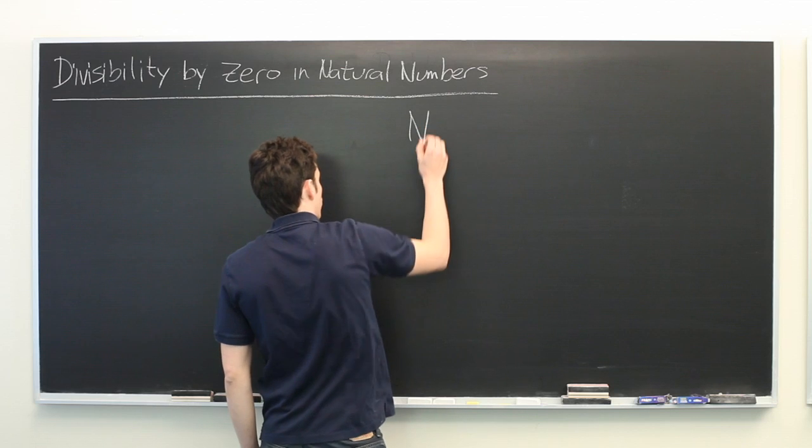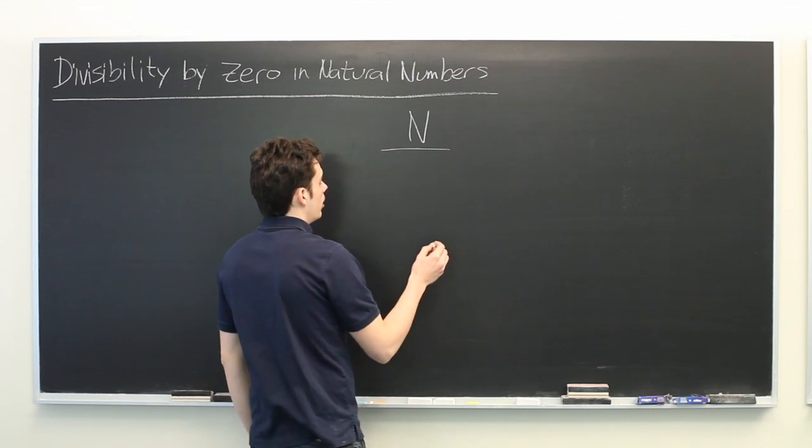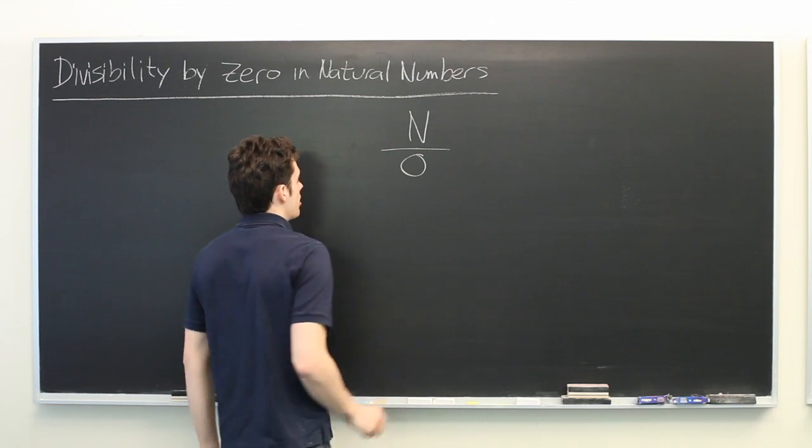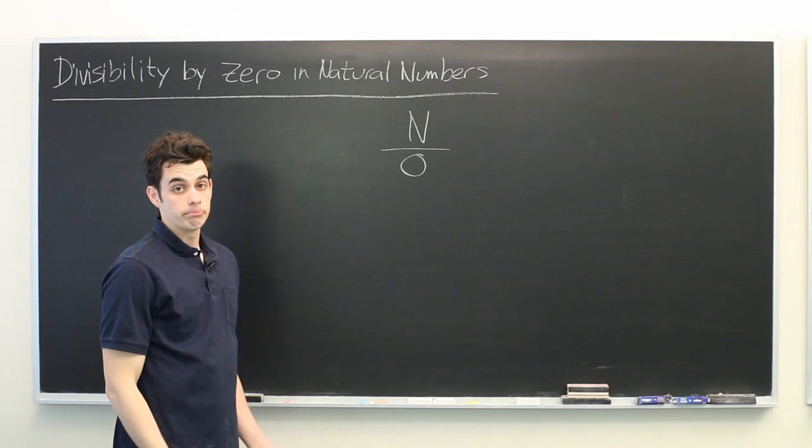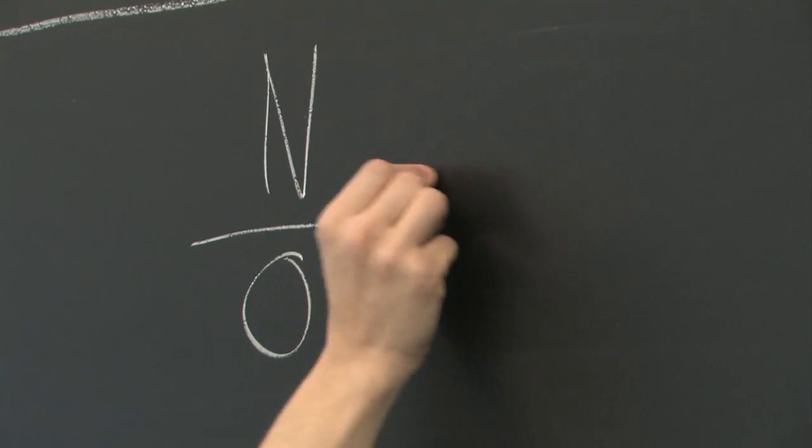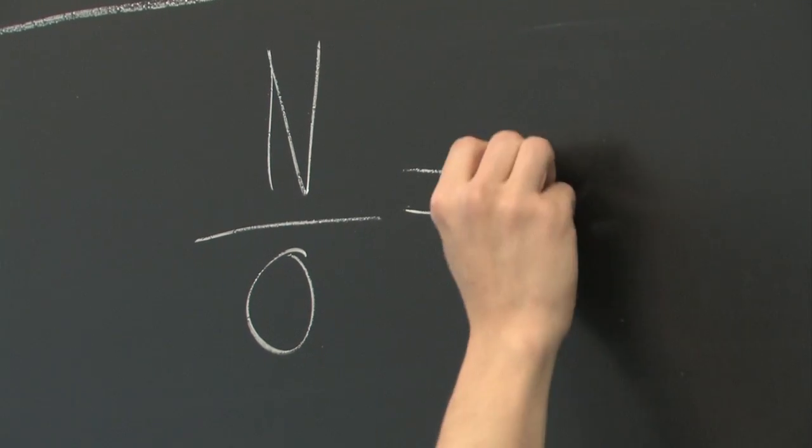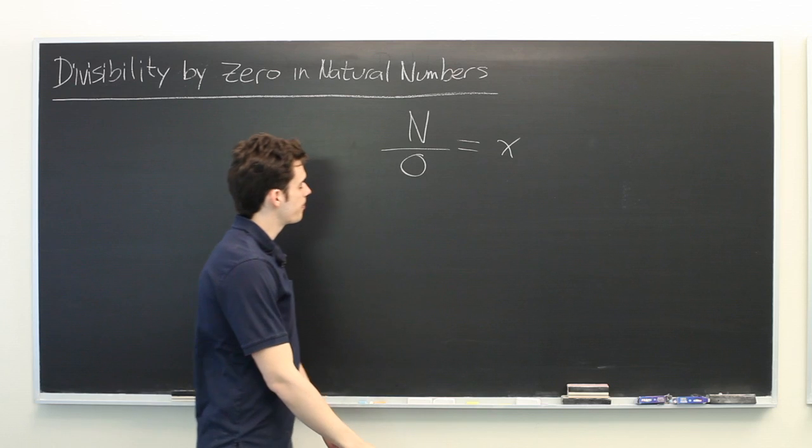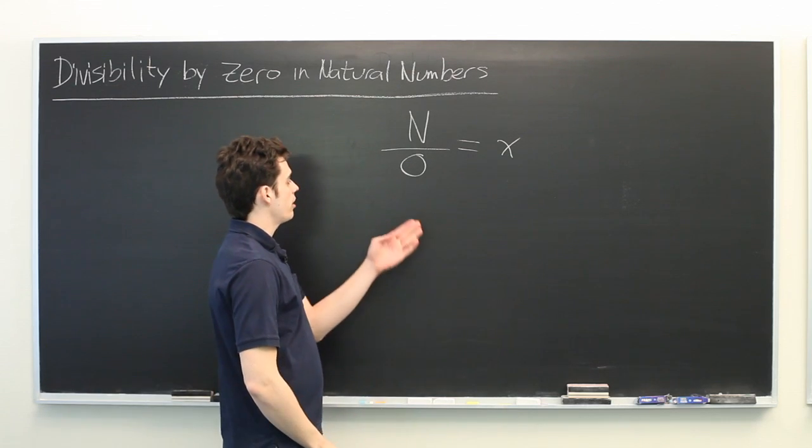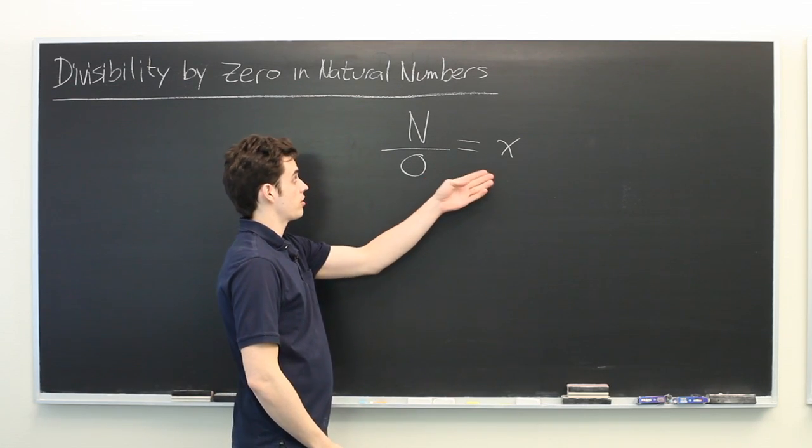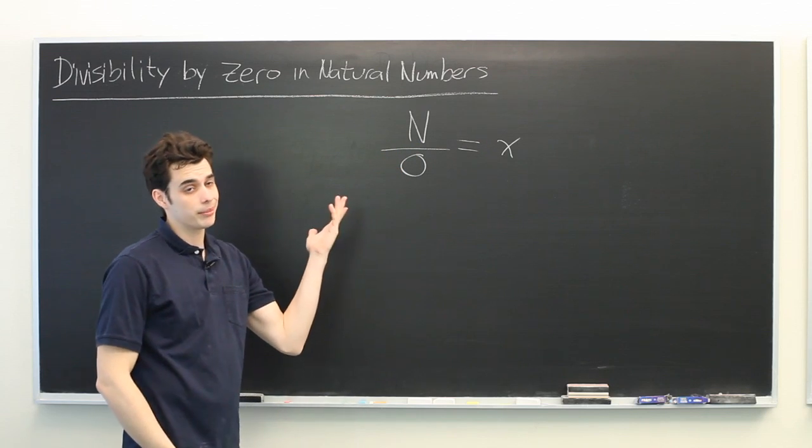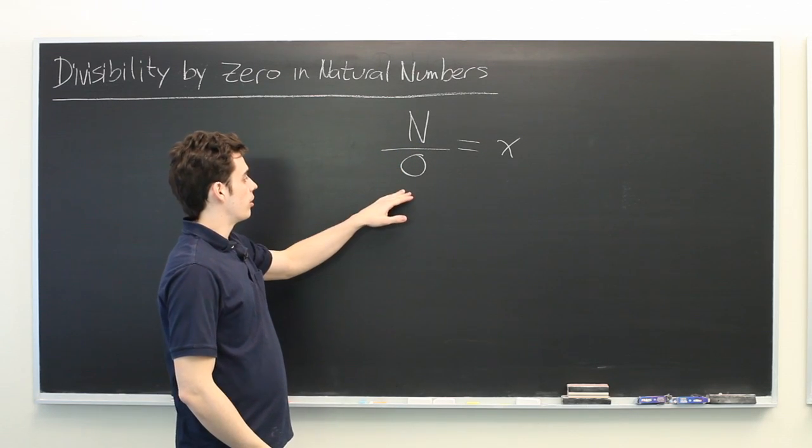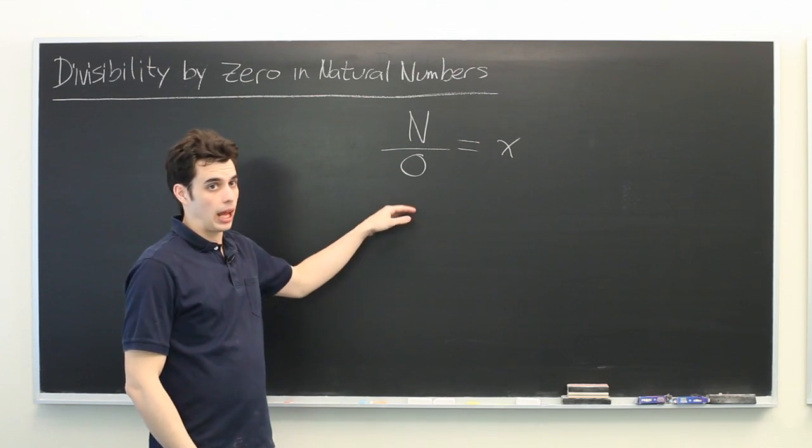Suppose that we've got some natural number n. We want to know if that number is divisible by zero. We'll say that the answer to this is x. Now, you might think that there is some answer x which will make this possible, but dividing by zero is undefined, and here's why.